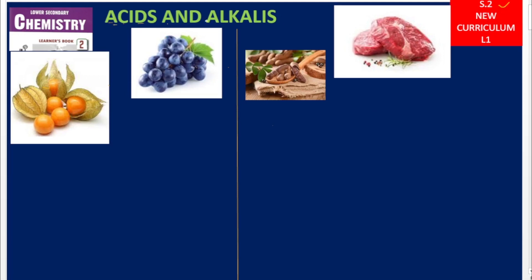Our first topic is about acids and alkalis. As you can see here, we have various fruits — these are citric fruits, these are called cape gooseberries, these are grapes, and we also have tamarinds and other items. Some of them contain acids, others contain alkalis or other bases.